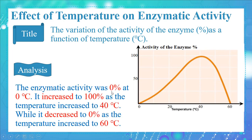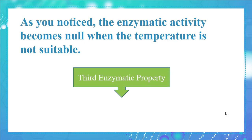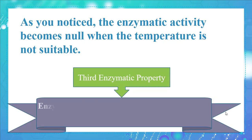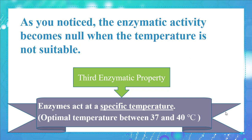The enzymatic activity was zero percent at zero degrees Celsius, increased to 100 percent as the temperature increased to 40°C, and decreased to zero percent as the temperature increased to 60°C. Enzymatic activity becomes null when the temperature is not suitable. So the third enzymatic property is: enzymes act at a specific temperature. The optimal temperature for enzymatic activity ranges between 37 and 40 degrees Celsius.